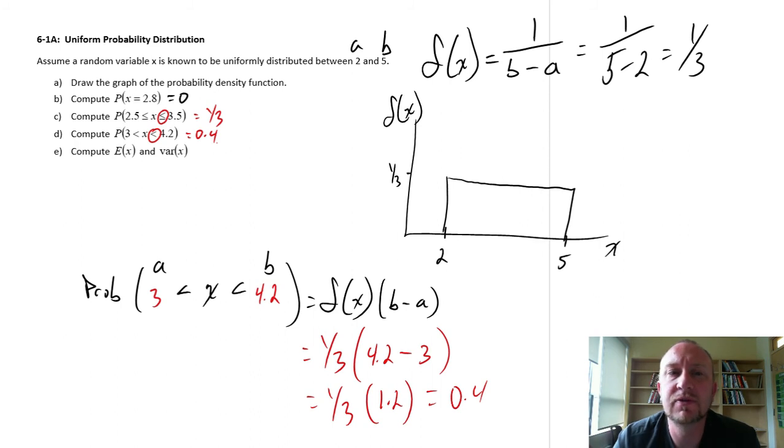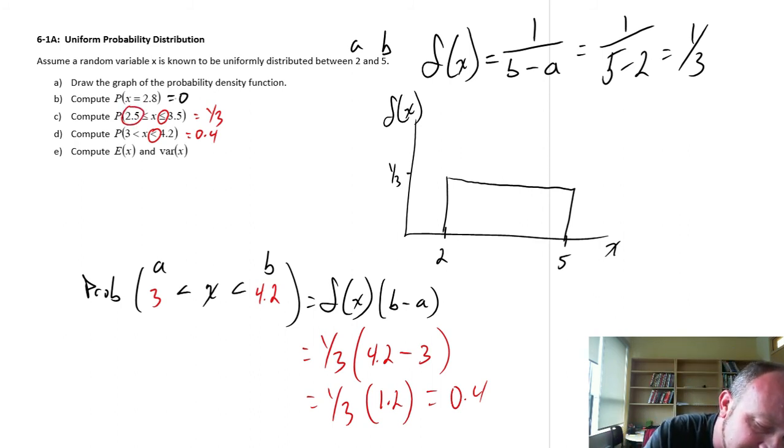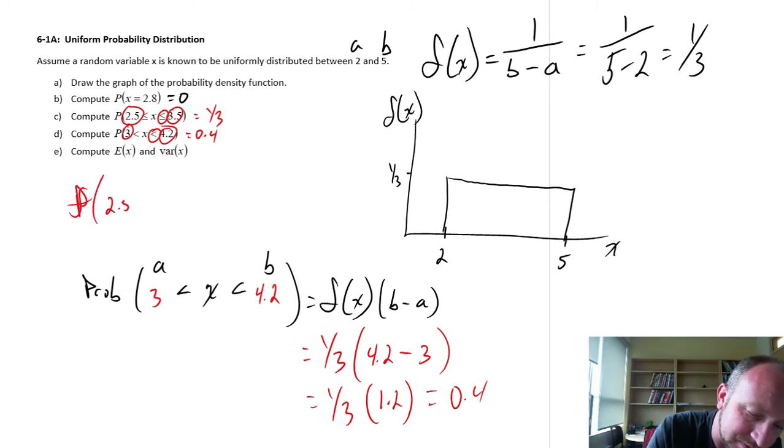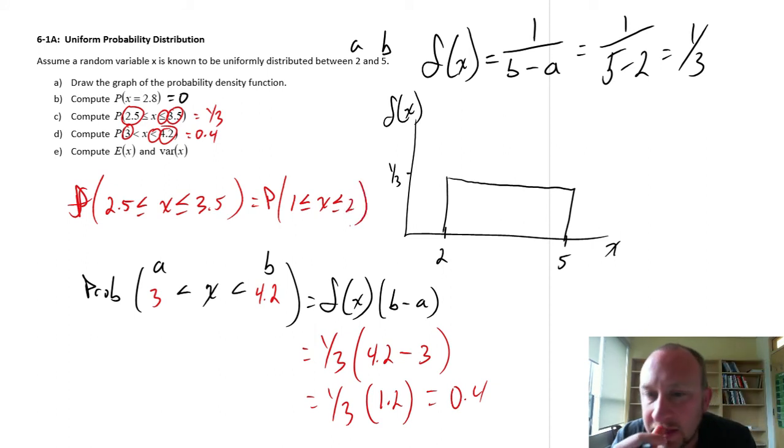Being a perfectly uniform distribution, the actual values in these problems doesn't have any impact on what our solution will be. And by that I mean the probability between 2.5 and 3.5, as we saw in part b, this will be exactly equal to the probability between say 1 and 2, because it's perfectly uniform. So what matters here is the width of that interval. It'll be a constant probability for any interval of a given width. That kind of makes it a little bit easier to deal with because we've got that uniformity.